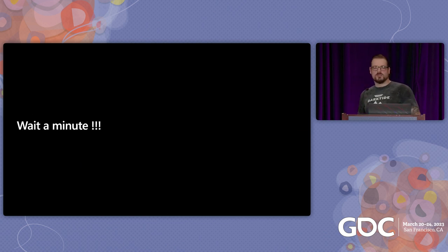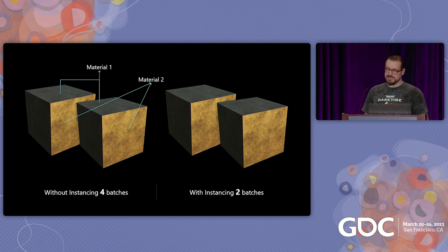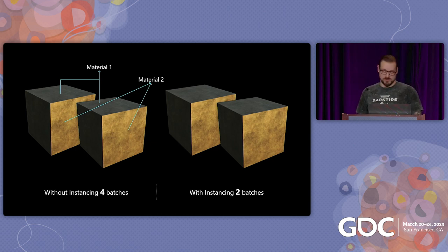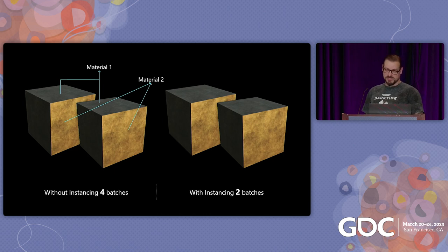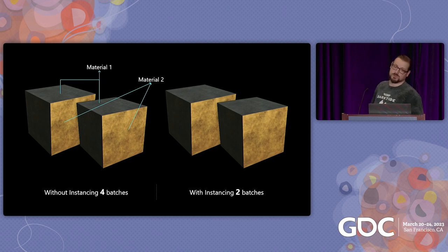Some of you might ask, is this really correct? It is, but there's a trick most new systems use called instancing — basically a way of processing multiple batches at the same time by merging several batches together. If multiple batches share the same mesh and material but have different material properties, they can be processed together. So instead of two objects with two materials giving four batches, they can actually just be two batches.